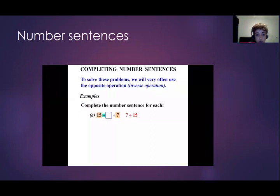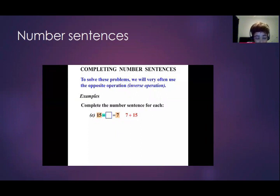For number sentences, in order to complete a number sentence, you'll normally have a block which stands in place of a missing value — that is the value you need to calculate. When we solve a number sentence problem, you normally need to use the opposite operation, the inverse. So, you have 15 minus a certain number is equal to 7. You take the 7 to the left-hand side; when you move a number from one side to the other, the operation or sign changes. So it would be 15 minus 7, and your missing number is 8.